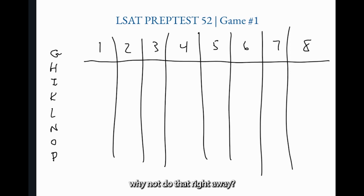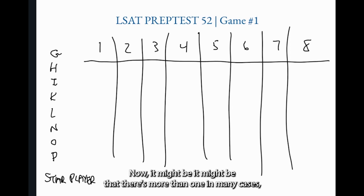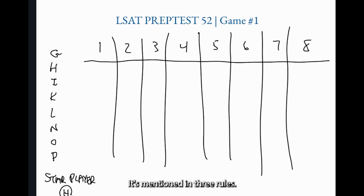So given that we're going to look for a way to link together these rules as we encounter them on the page, one way to do that is to address what I like to call the star player to identify who that is. Now it might be that there's more than one in many cases, but the star player is the player that's mentioned in multiple rules ultimately in more rules than any other. As you glance down the rules there you'll see that that is clearly letter H. It's mentioned in three rules so what I'm going to do is go under my columns here and just put an H kind of right in the middle of the white space, and then I'm going to begin relating the other players to H with all the rules that mention H.